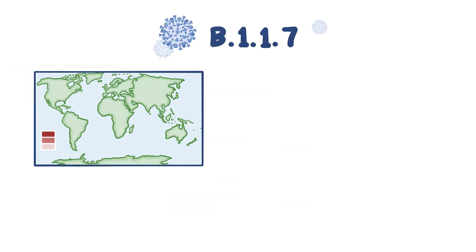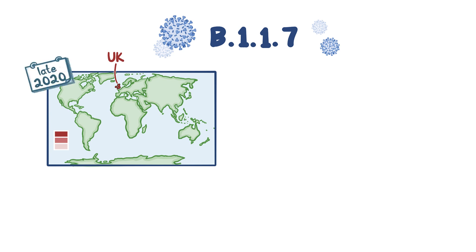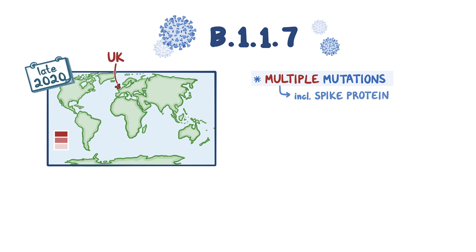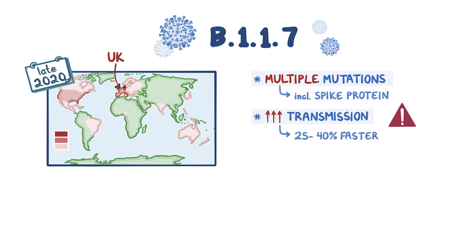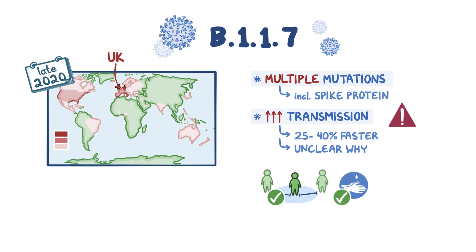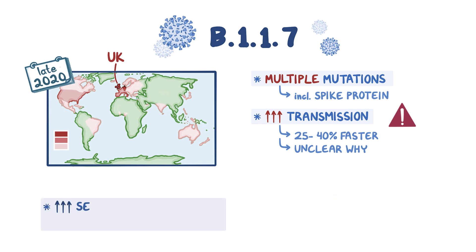B117 was first discovered in the United Kingdom in late 2020 and contains multiple mutations, including those within the spike protein. By December of 2020, it was reported to be present in numerous countries, including the US. This strain is considered to be one of the most transmissible, and it spreads between people 25-40% faster than the other COVID-19 strains. It's still unclear why this higher transmission rate occurs. There is some concern that B117 may also have a higher rate of severe COVID-19 symptoms, as well as an increased fatality rate.